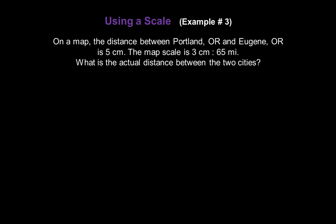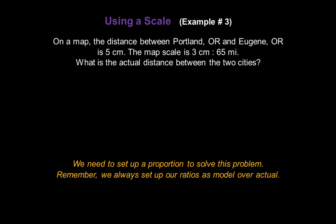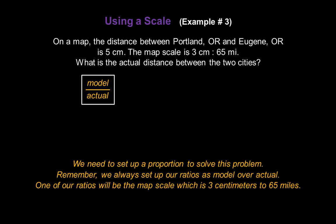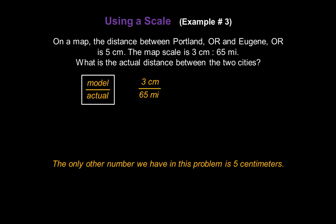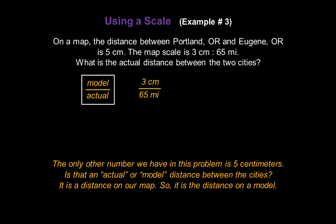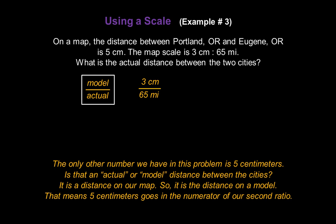On a map, the distance between Portland, Oregon and Eugene, Oregon is 5 centimeters. The map scale is 3 centimeters equals 65 miles. What's the actual distance between these two cities? We need to set up a proportion. Remember, we always set up our ratios as model over actual. One of our ratios is the map scale: 3 centimeters to 65 miles. The only other number is 5 centimeters — that's a distance on the map, so it's a model distance and goes in the numerator of our second ratio.